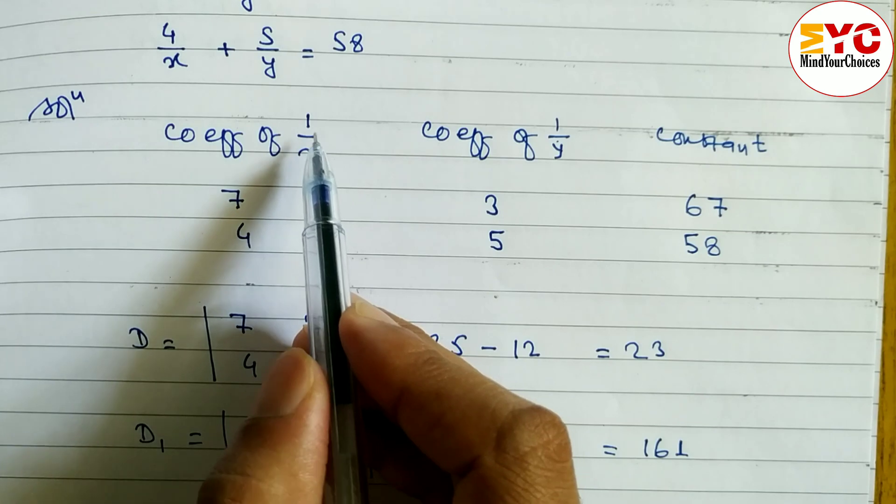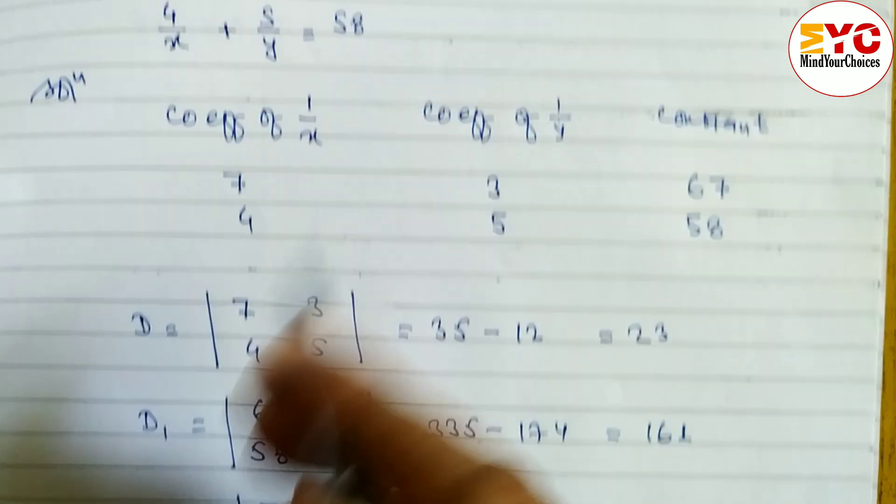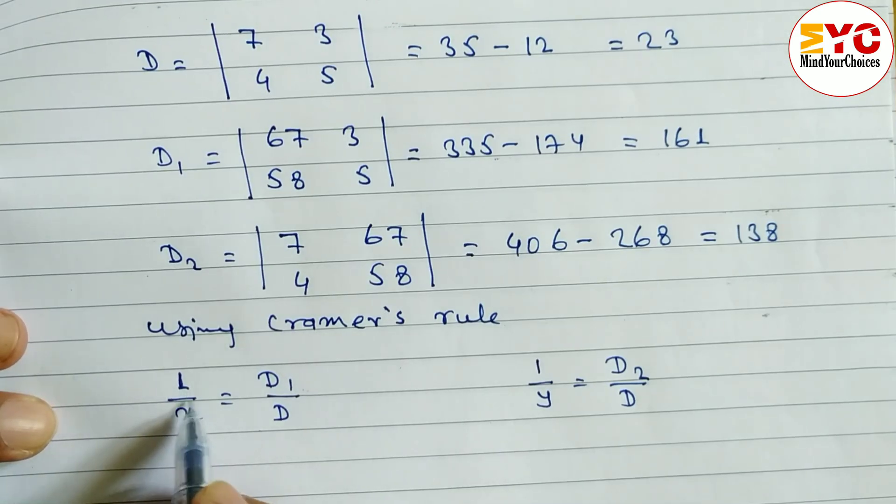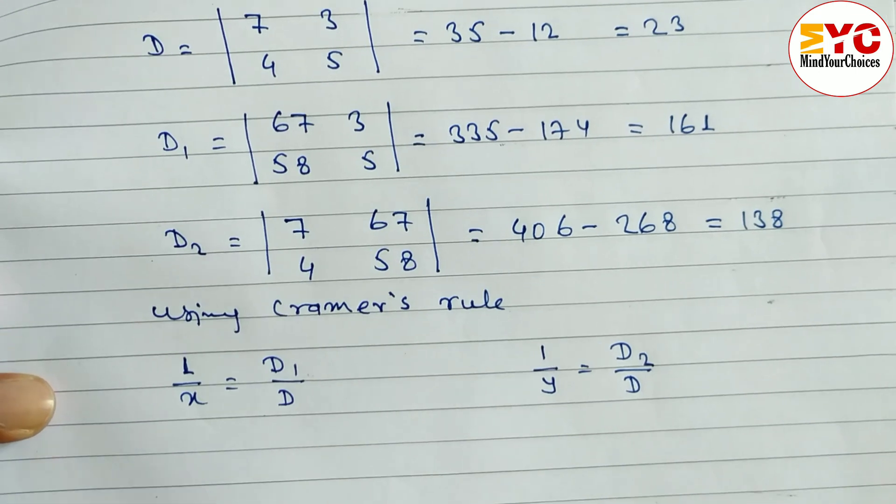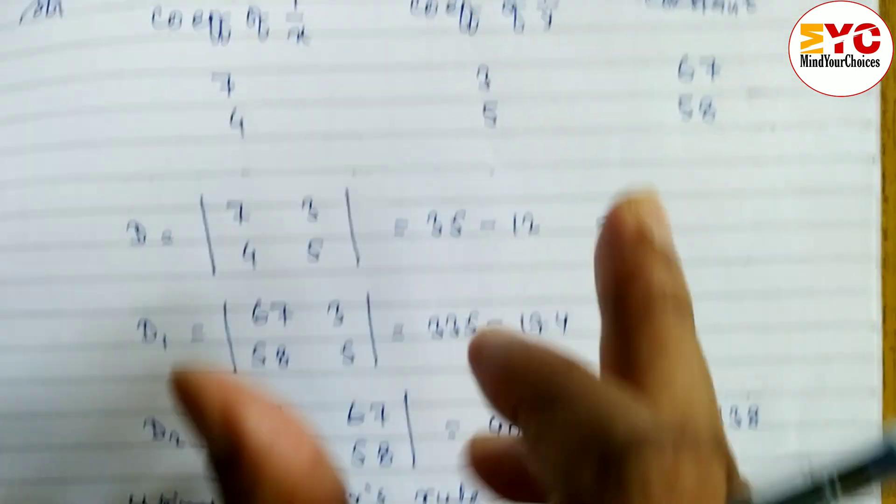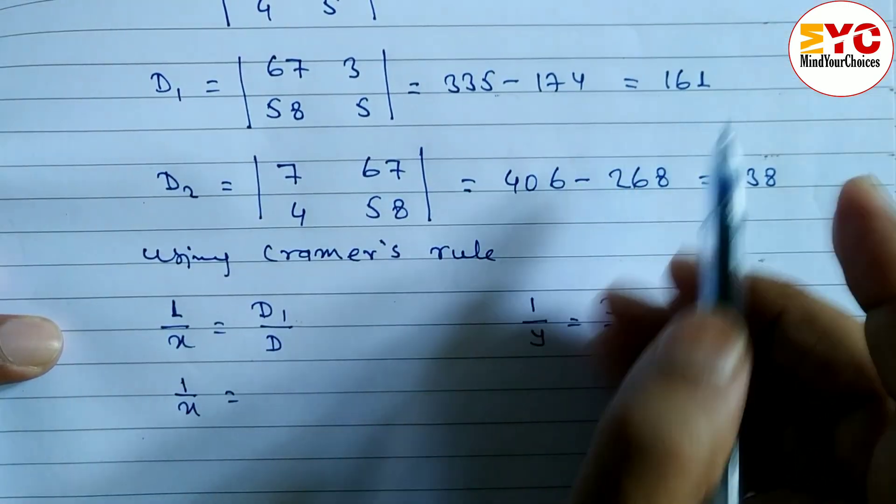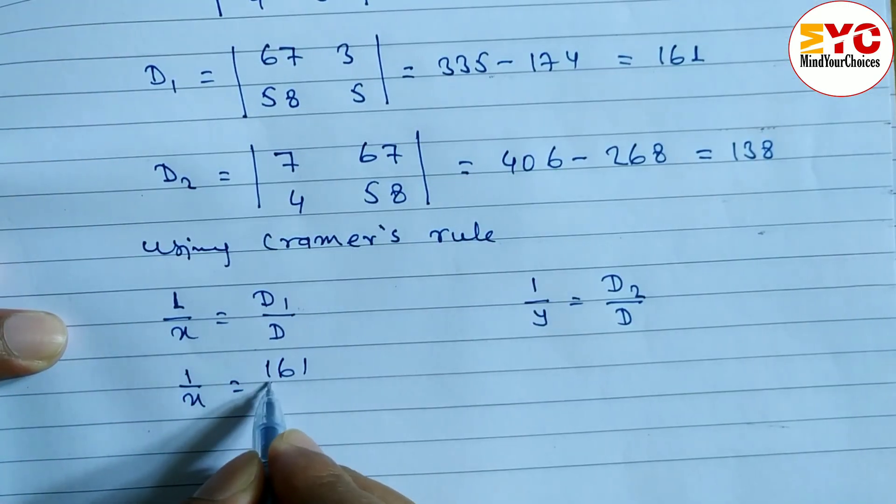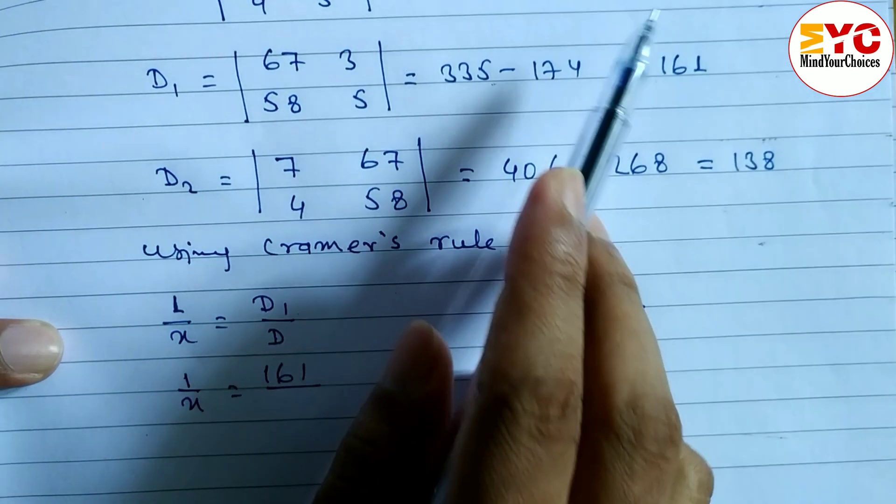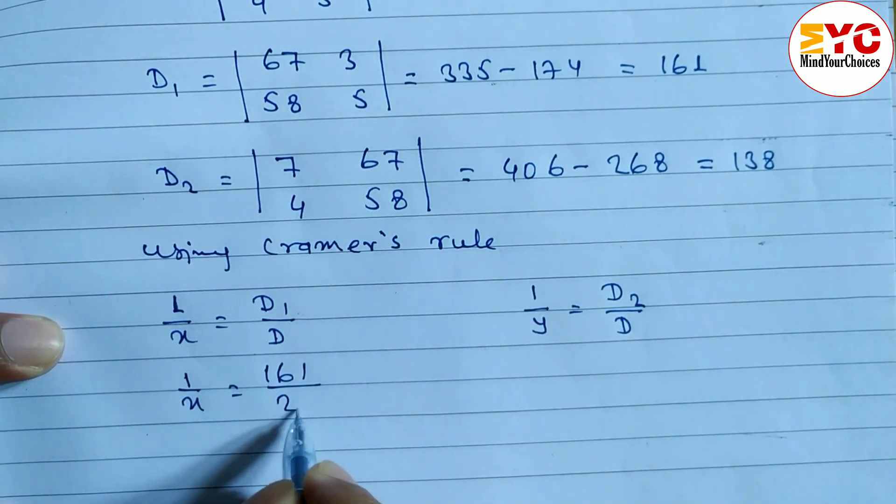By late also. Because we can late also. 1 by x is equal to p. Then no need to do. Directly you can write here p. And after that again we have to put the value of p. So better write down 1 by x, 1 by y. Why to late? 1 by x is equal to d1. What is the value of d1? 161 by d. What is the value of d? 23.